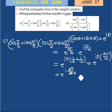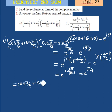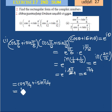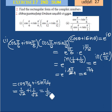This gives e to the power i(5π/4), which equals cos(5π/4) plus i sin(5π/4). Therefore the answer is 1 by root 2 into 1 plus i. That is the answer for this first sum.